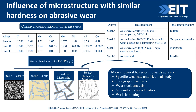We chose three different steels with different chemical compositions to produce all four microstructures at similar hardness levels. For steel A, we performed austenizing followed by austempering to produce bainite, and separately water quenched and tempered to produce tempered martensite. Steel B was austenized and rapidly water quenched to produce martensite. Steel C was obtained in the as-received pearlitic condition.